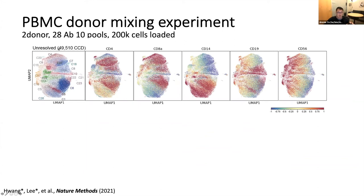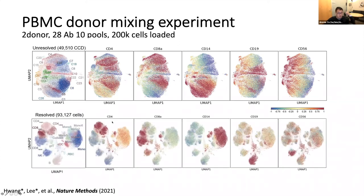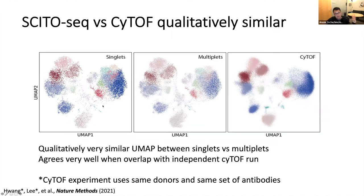Sequencing peripheral blood mononuclear cells, we loaded 200,000 cells into a single 10x channel and recovered 50,000 droplets containing cells — a 10x increase in throughput. But since many of these droplets contain multiple cells, without the initial barcode we basically can't resolve any of the data — peripheral blood cells with CD4, CD8, CD14, CD19, and CD56 look like they're going everywhere. But when we include that first pool barcode, we can resolve upwards of about 100,000 cells — a 20x increase in throughput — and can identify CD4-positive T cells, CD8-positive T cells, CD14-positive myeloid cells, CD19-positive B cells, and CD56-positive natural killer cells.